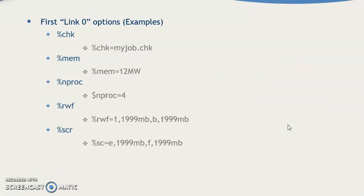The link zero section is optional. For example: %chk, %chk=myjob.chk, %chk=1, %mem=12MW, %nproc=$nproc, %nproc=4, %rwf with %rwf=1, 1.999MB and B, 199MB, and %ac=%ac=e. These are further link zero command examples.